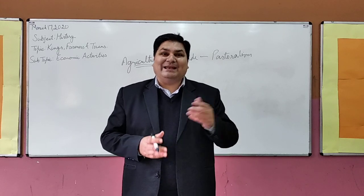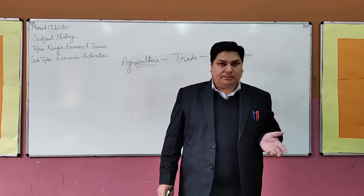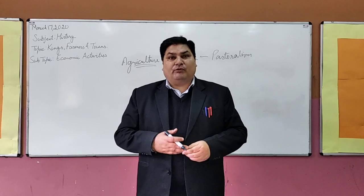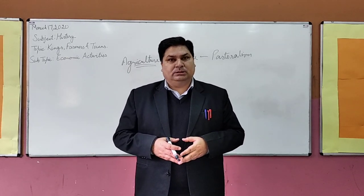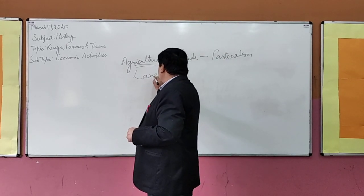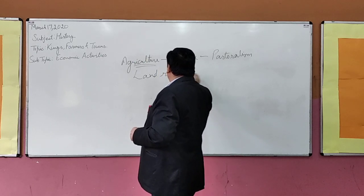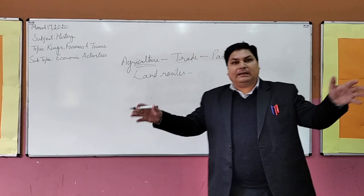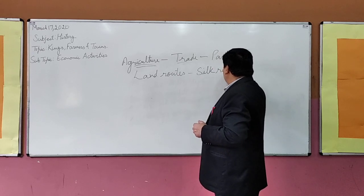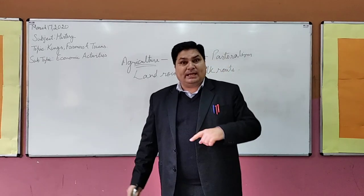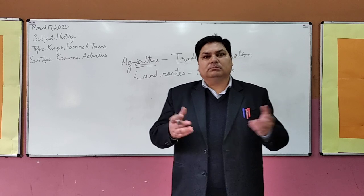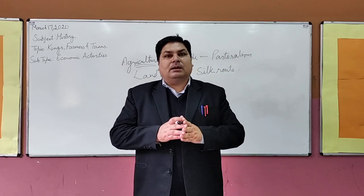Then there was external trade — that is, exports and imports. India at that time had trade relations with the Roman Empire in Europe, Africa, Arabic countries, China, and Southeast Asian countries. For this external trade, two types of routes were used: sea routes as well as land routes. The land routes connected the entire Indian subcontinent, and the Silk Route connected India to China as well as European countries. It was entirely a land route and it was a fairly impressive trade at that time.